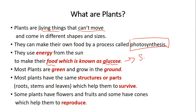Glucose is a sugar. Most plants are green and grow in the ground. Most plants have the same structures or parts like roots, stems, and leaves, which help them to survive. Some plants have flowers and fruits, and some have cones, which help them to reproduce — to produce more plants.